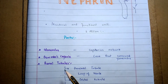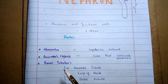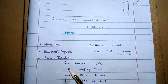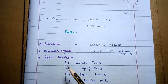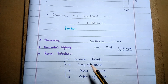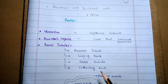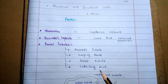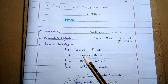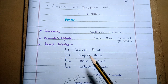Then the renal tubules. The renal tubule is the tubular system of the nephron through which urine formation occurs. Renal tubules are further divided into the proximal tubule, loop of Henle, distal tubule, and collecting duct. The proximal tubule is the tubule which lies in the cortex of the kidney.